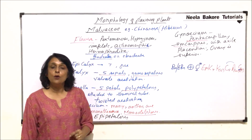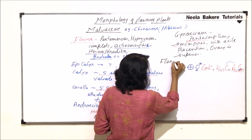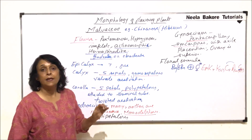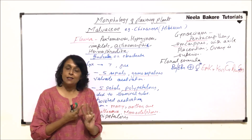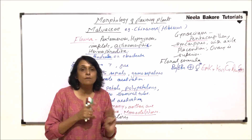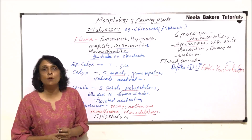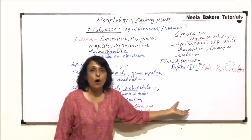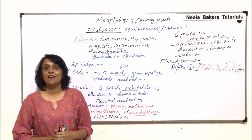Once we have understood this, we need to learn how to draw the floral diagram. The maximum questions asked based on families are on three things: the formula, identification of certain features on the basis of the formula, and the floral diagram. Then there is the economic importance — the important plants belonging to this family. In the next part, we will use the same information to draw a floral diagram and find some important plants belonging to this family.